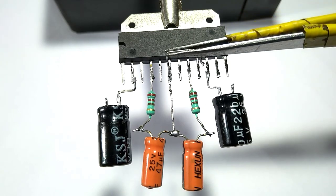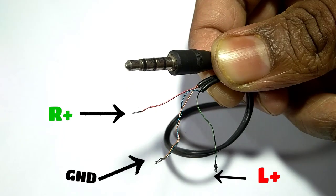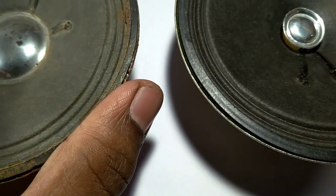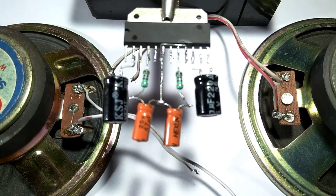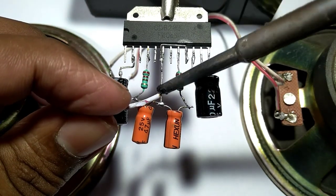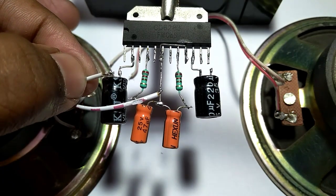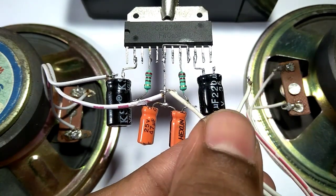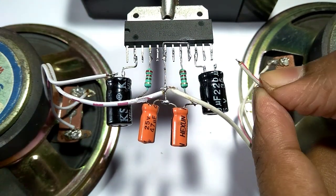Then I need an audio jack and two speakers. I connect the speaker ground to IC pin 6 and positive to capacitor negative terminal. Then I connect the second speaker according to the first one, as you can see what I do.